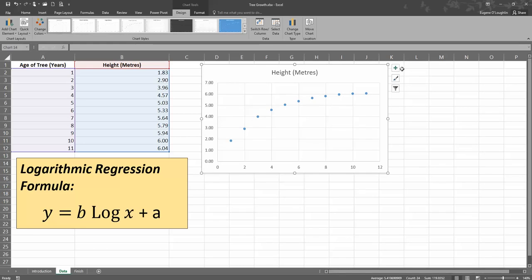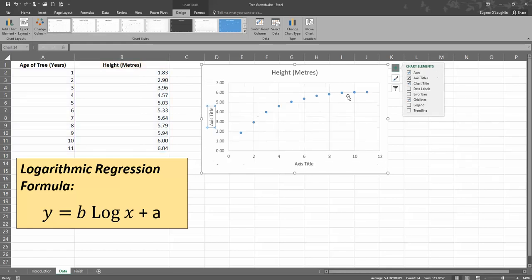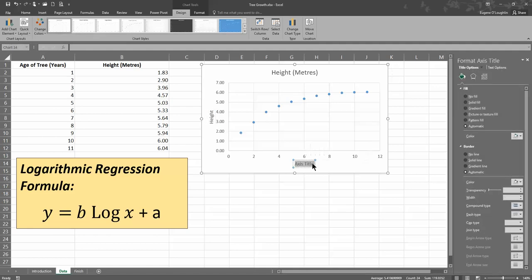Let me make a couple of changes to it just to make it easier to understand. I'm going to hit the plus sign at the top right-hand side of the chart here and select the axis title box so that in my y-axis here, I'm going to put in the height. And the x-axis at the bottom, I'm going to put in the age.